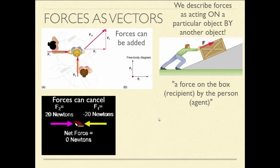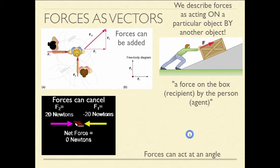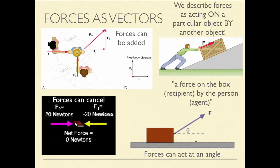Forces can cancel. If you have two force vectors that point in equal and opposite directions — anti-parallel and equal magnitude — the net force, which is the sum of all the forces, would be zero. So the book would not move. Also, forces can act at an angle; we can describe the direction of forces as some angle with respect to another direction, like 30 or 40 degrees with respect to the horizontal.